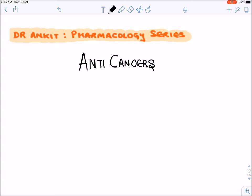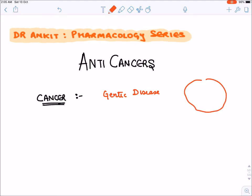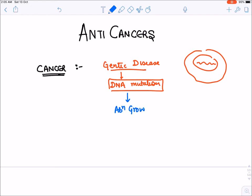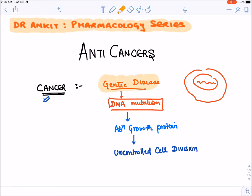Today we will be starting with anti-cancer drugs. First, we should know the characteristics of cancer. Cancer is a genetic disease — inside the cell there is DNA, and some DNA mutation occurs. Due to this DNA mutation, there is formation of some abnormal growth protein, which can lead to uncontrolled cell proliferation and uncontrolled cell division. This uncontrolled cell division is known as cancer.